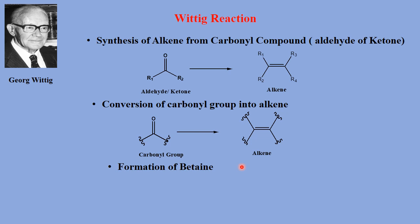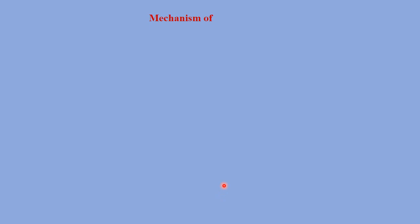In this reaction, the oxygen of the carbonyl group gets replaced by the alkene part. There is a formation of an intermediate compound called a betaine. The mechanism of the Wittig reaction is the imaginary pathway of the chemical reaction which tells us how the reaction takes place and how changes occur during the chemical reaction.